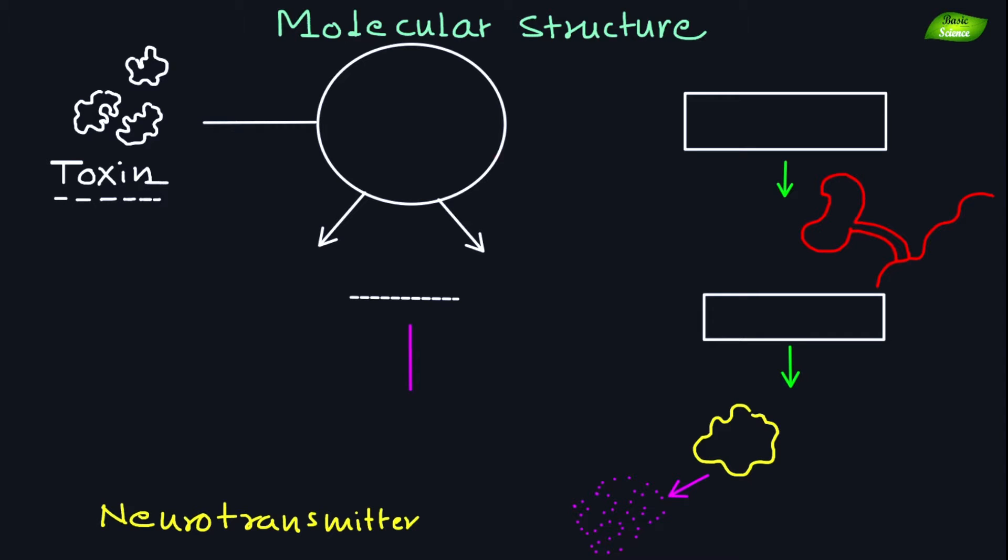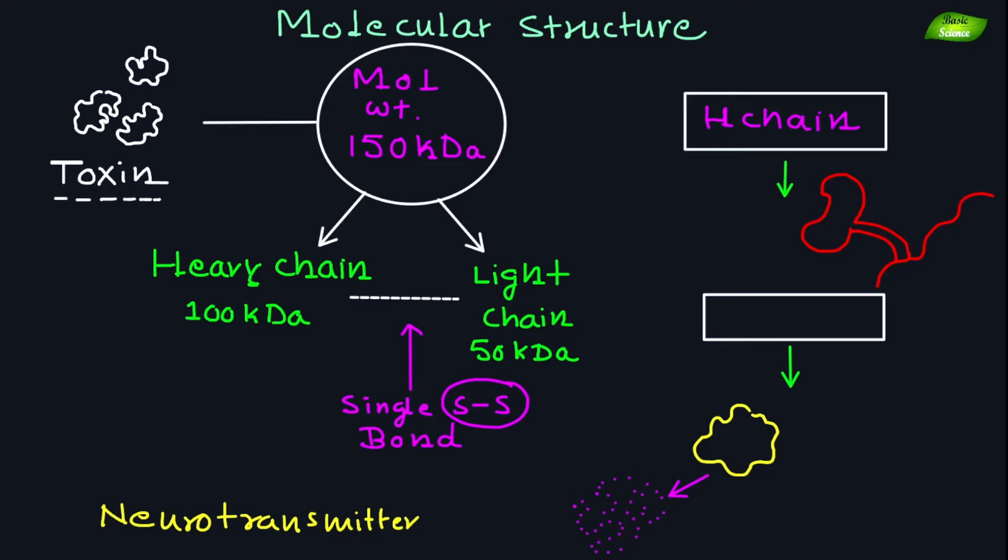Botulinum toxin is a complex protein with a molecular weight of approximately 150 kiloDaltons. It consists of a heavy chain (about 100 kDa) and a light chain (about 50 kDa) linked together by a single disulfide bond. The heavy chain is responsible for binding to receptors on nerve cells, while the light chain possesses the enzymatic activity that disrupts neurotransmitter release.